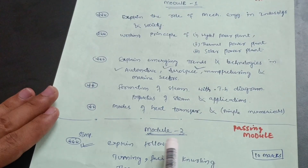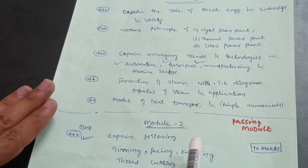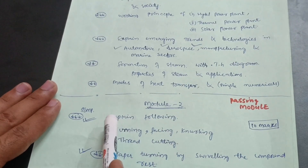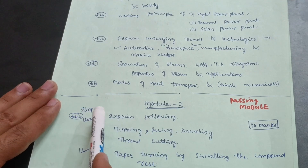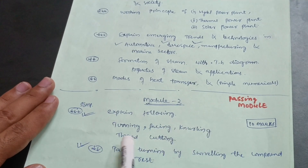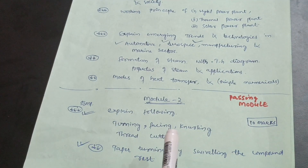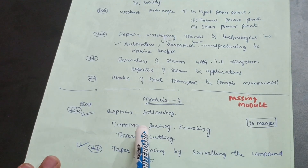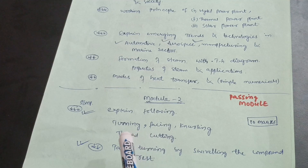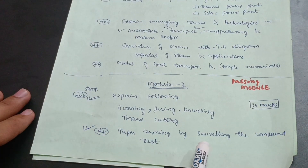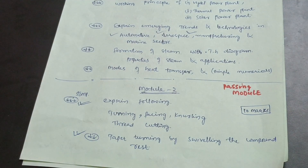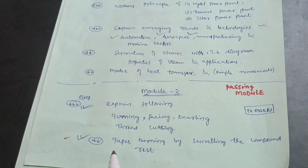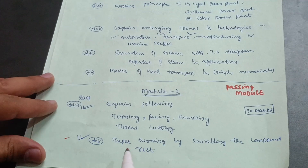Module 2 is the passing module you have to focus on more than other modules. A super important question is: explain turning, facing, knurling, and thread cutting — you have to make neat sketches and write the theory in your own language. Also, taper turning by swiveling the compound rest is one of the most important questions, frequently asked in the VTU examination under the 2018 scheme.